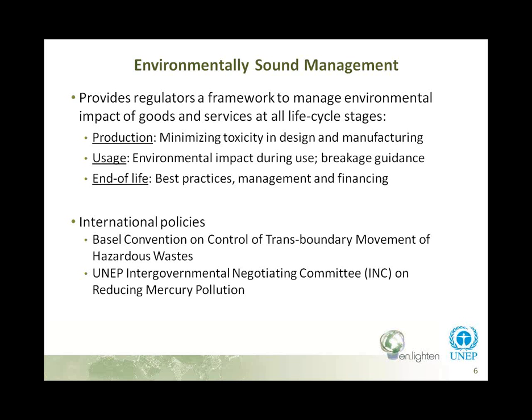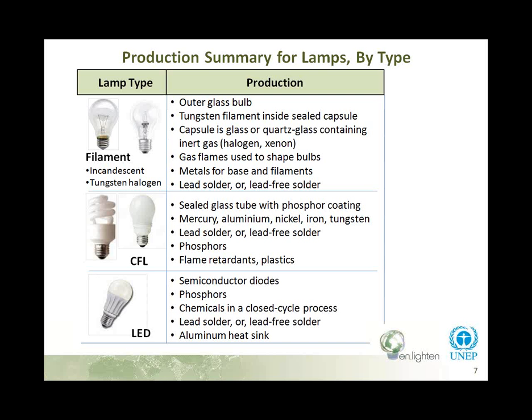This chapter includes international policies — particularly the Basel Convention on the Control of Transboundary Movement of Hazardous Waste, and the ongoing UNEP-facilitated Intergovernmental Negotiating Committee on Reducing Mercury Pollution. The types of lamps covered include filament lamps (incandescent and tungsten halogen), compact fluorescent lamps which contain mercury, and light-emitting diodes. LEDs do not contain mercury, but they have many other materials, and life-cycle studies are being published. When our new learning site is available, we'll be starting a blog to keep you up to date on the latest literature.